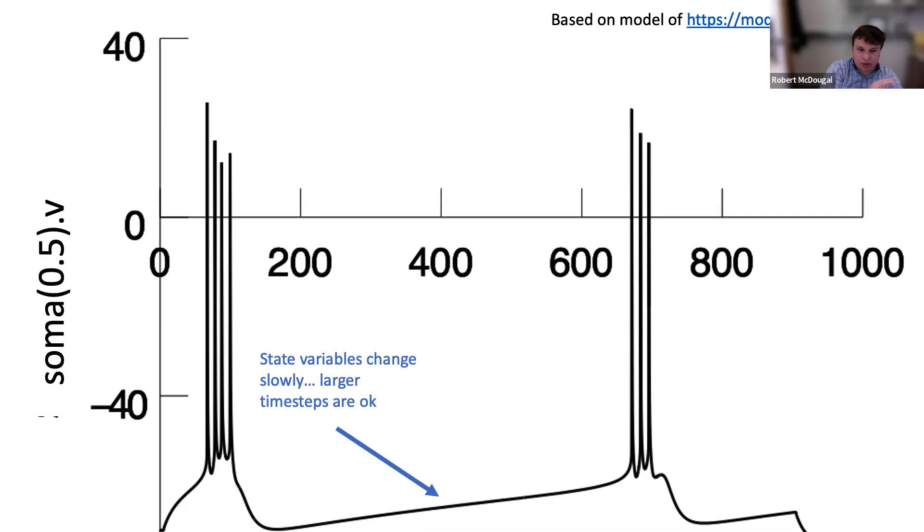But down here, in between those bursts, for hundreds of milliseconds—which is a long time—state variables are changing very slowly. At least in principle, larger time steps are okay. Ted showed us that if we're doing implicit Euler we can get away with larger time steps.